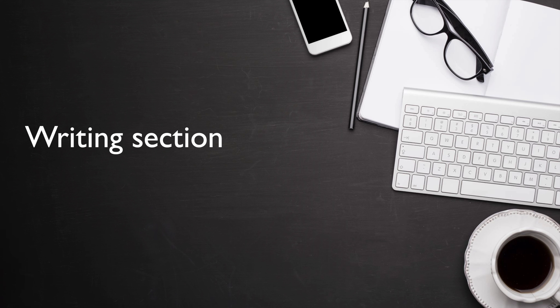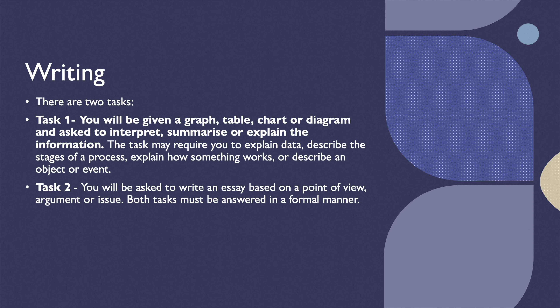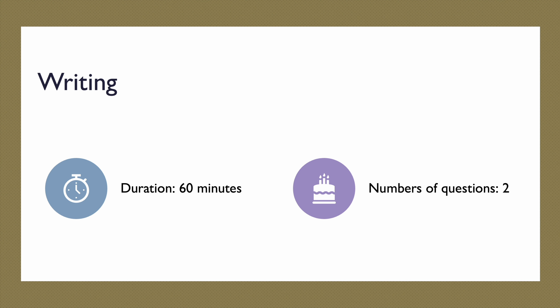The writing section is arguably one of the most challenging parts of the test and contains two tasks. In Task 1, you will be given a graph, table, chart, or diagram and asked to interpret, summarize, or explain the information — which may include explaining data, describing the stages of a process, explaining how something works, or describing an object or event. In Task 2, you will write an essay based on a point of view, argument, or issue. Both tasks must be answered in a formal manner and the writing section must be completed within 60 minutes.